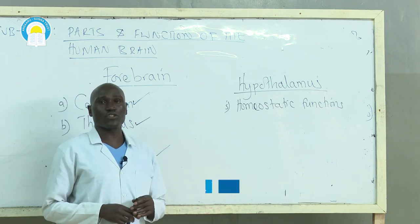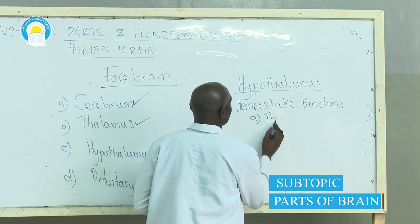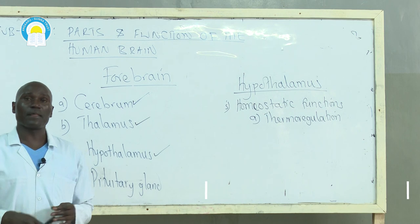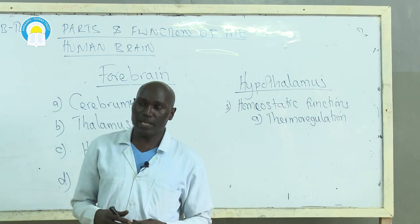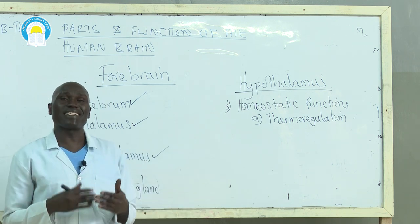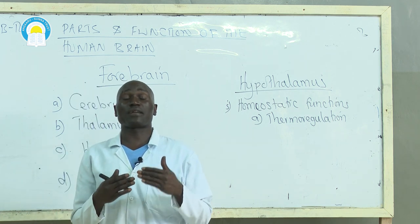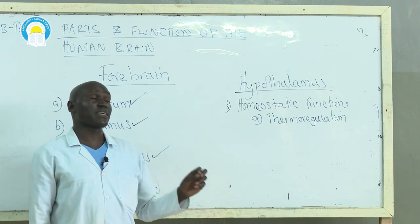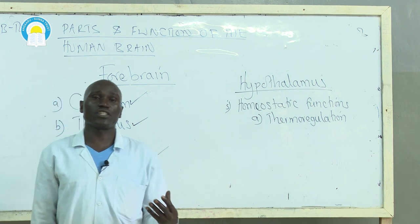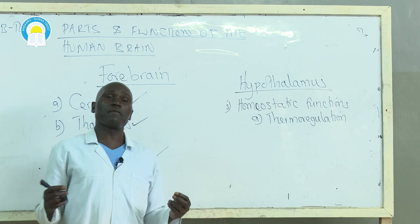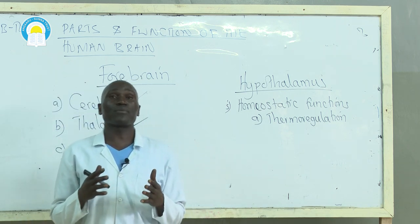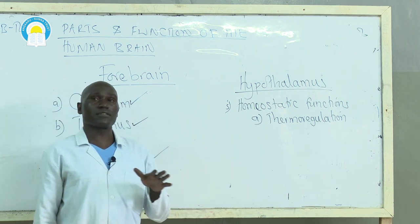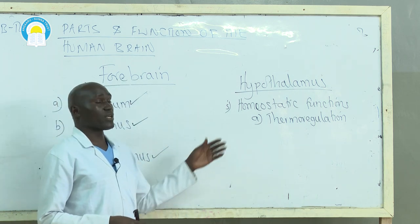One homeostatic function of the hypothalamus is thermoregulation. Hypothalamus has thermoreceptor cells within it. When blood reaches the brain, thermoreceptor cells detect whether body temperature has risen above or dropped below the norm. Once those changes are detected, hypothalamus sends nerve impulses to various body organs to adjust and restore body temperature back to normal.